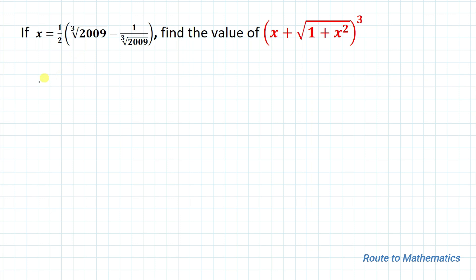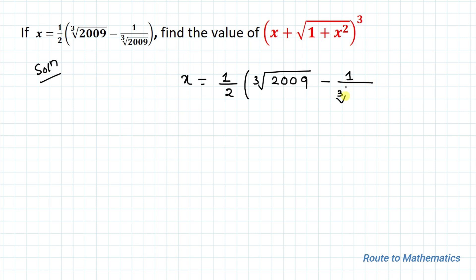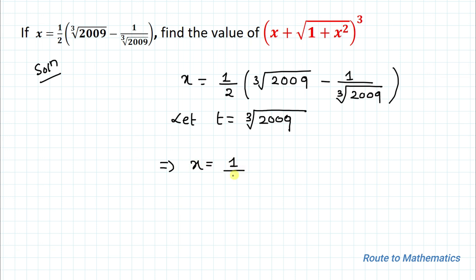Without any delay, let's start the solution. We have the given value of x, that is x equals 1/2 times (cube root of 2009 minus 1 divided by the cube root of 2009). Now let's take t equals to the cube root of 2009, so the value of x becomes 1/2 multiplied with (t minus 1/t).